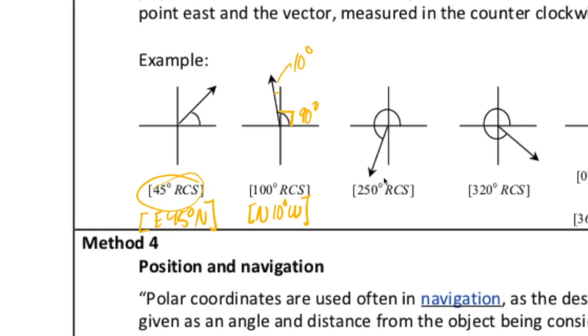Let's take a look at the next example, 250 degrees RCS. Well, we know that this portion here, this first portion here, that's 180 degrees. So, this remaining portion here, that's got to be 70 degrees. In this case, west 70 degrees towards the south.